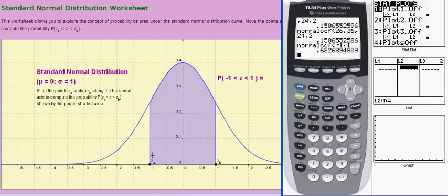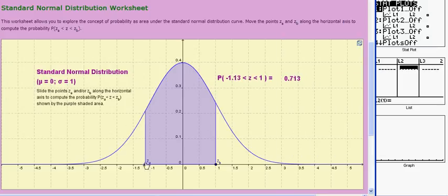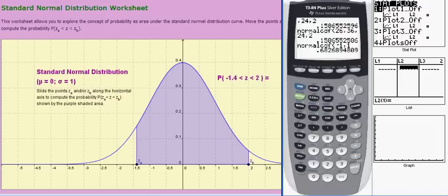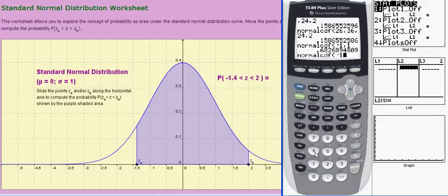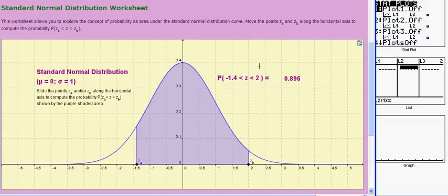And let's just change this example a little bit to show you how that works. So negative 1.4, let's say, to 2. Again, normal CDF, negative 1.4 comma 2, enter. And it computes a probability of about 89.6%.